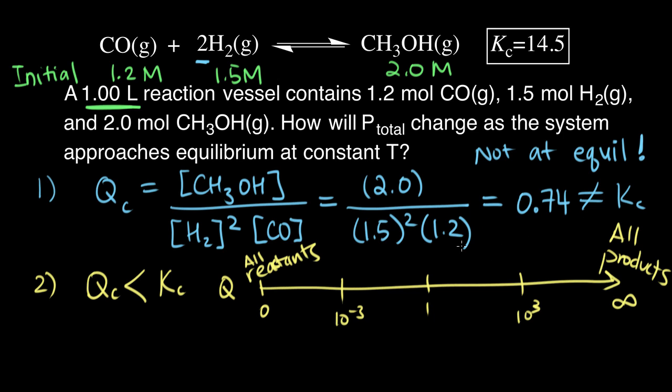What we're really worried about here is just looking at the relative value of Q and K and seeing how the reaction concentrations are going to shift. So Q, we can put on our number line, is somewhere around here. So this is our Q, and this is our K. We can see that Q is less than K on our number line. So what's going to happen is, in order to reach equilibrium, our concentrations are going to shift to the right to get Q closer to K.